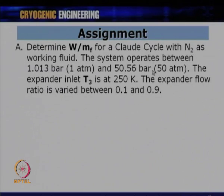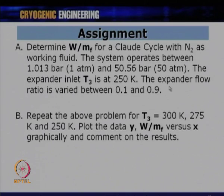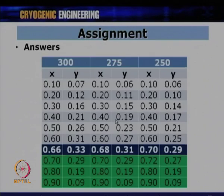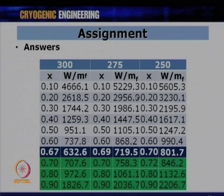An assignment is given on similar lines: nitrogen as working fluid, but at 50 atmospheres pressure, T_3 = 250 K, expander flow rate varied from 0.1 to 0.9, repeating for multiple T_3 values. The answers for Y versus X and W / M_f versus X for different T_3 values have been provided — please carry out this exercise and verify your results match. Thank you very much.